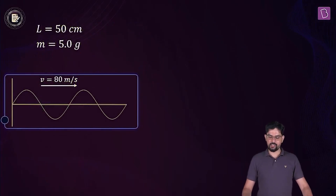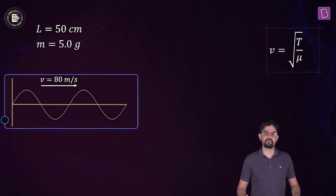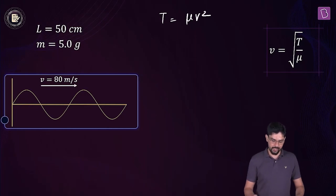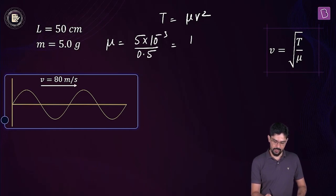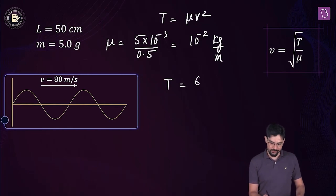First, we find the tension in the wire using the formula. The tension equals mu times v squared. Here v is 80 meters per second. Computing mu: mass in kg per unit length gives 10 to the power minus 2 kg per meter. So the tension in the wire equals 6400 times 10 to the power minus 2, which is 64 newtons.